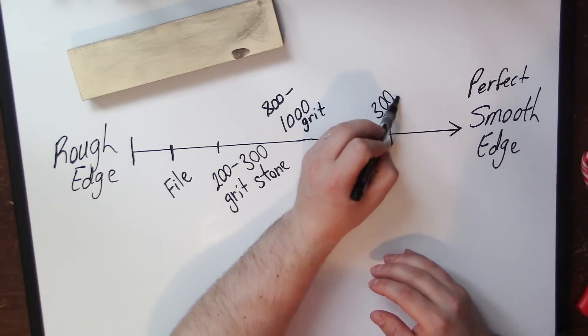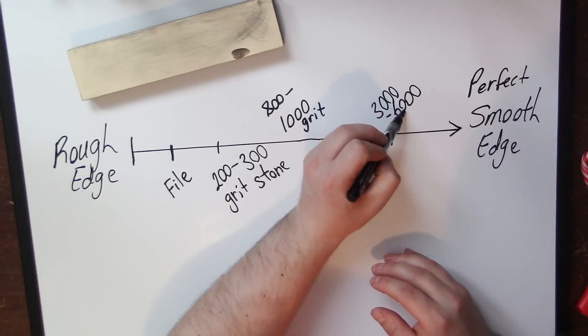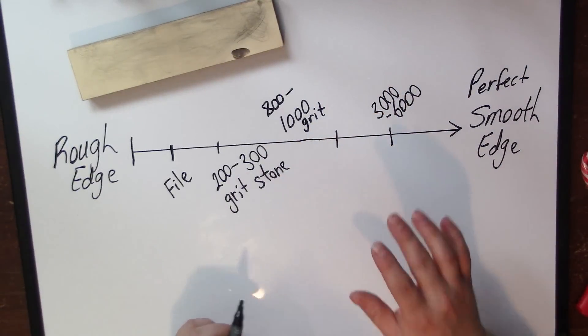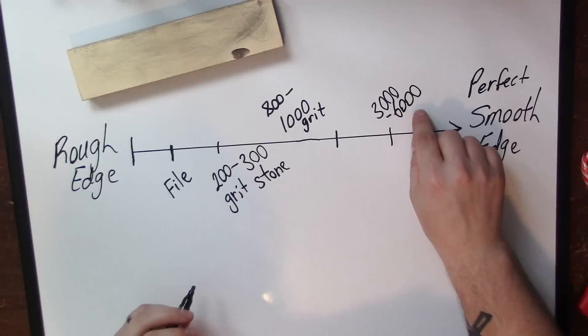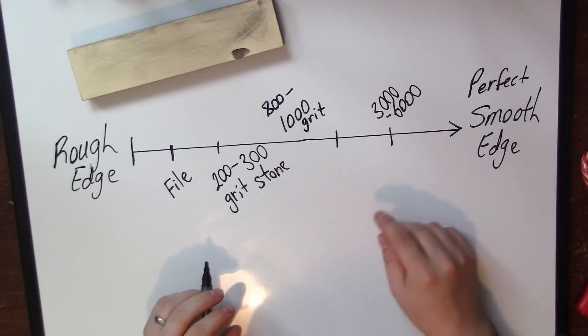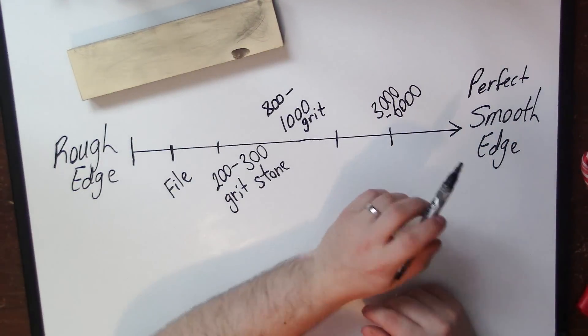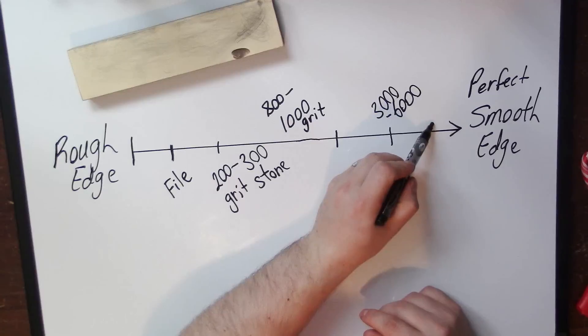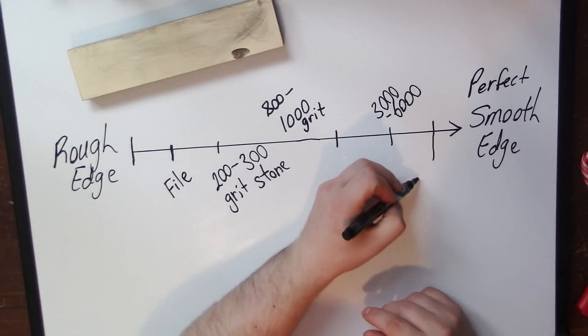Finally, now this edge is going to be super smooth right off this stone. That last little bit to take it over the top is a strop.